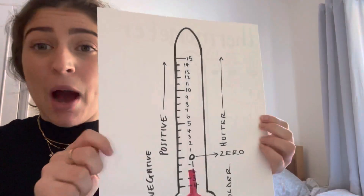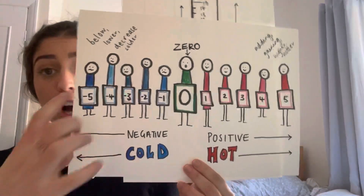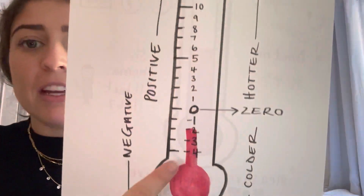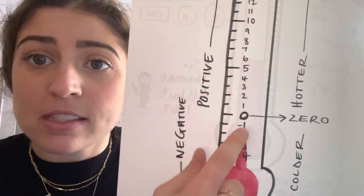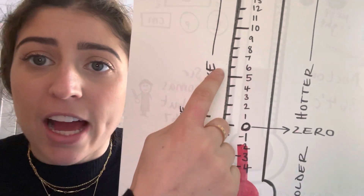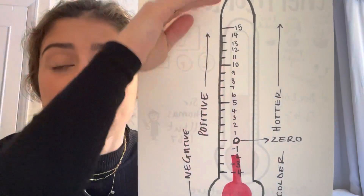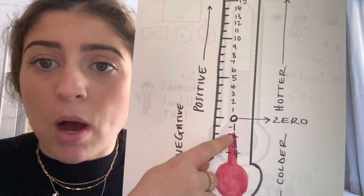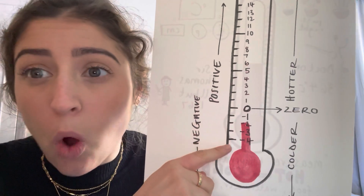Okay, so this is now our number line, but this one's going vertically. So if this one's going horizontally — across the page — we're going back to our thermometer, which is vertical, it's going up. So we can see here we've got zero, and these are our positive numbers: 1, 2, 3, 4, 5, 6, and it goes up. These numbers are getting hotter and hotter, hottest, all the way up. Whereas when we get to zero, the minus 1, minus 2, minus 3, minus 4 — the numbers are getting colder.